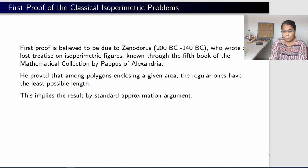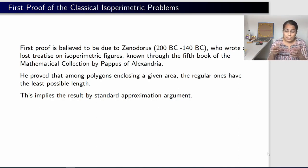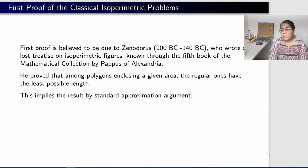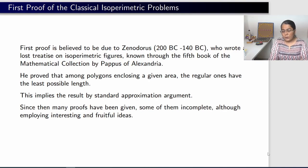In one of the presentations today by Parul, you will see that regular polygons converge to a circle as the number of sides goes to infinity. And any piecewise smooth, simple, closed curve can be approximated by a polygon. Using standard approximation arguments, one can take the proof for polygons and extend it to arbitrary piecewise smooth, simple, closed curves — also called rectifiable curves.